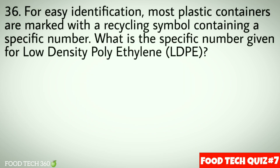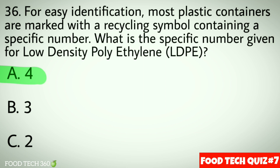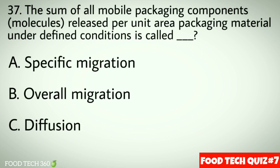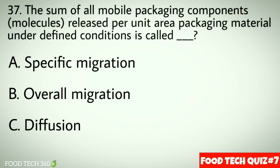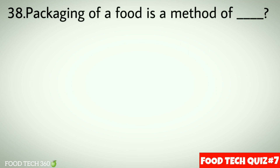Question number 36: For easy identification, most plastic containers are marked with the recycling symbol containing a specific number. What is the specific number given for Low Density Polyethylene (LDPE)? Options: a) 4, b) 3, c) 2. Correct answer: a) 4. Question number 37: The sum of all mobile packaging components released per unit area of packaging material under a defined condition is called — options: a) Specific migration, b) Overall migration, c) Diffusion. Correct answer: b) Overall migration.